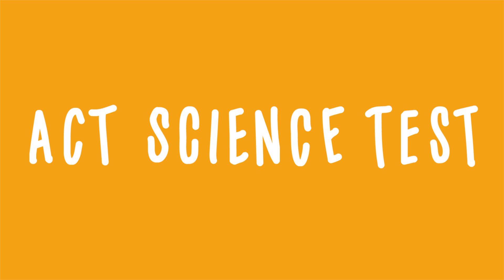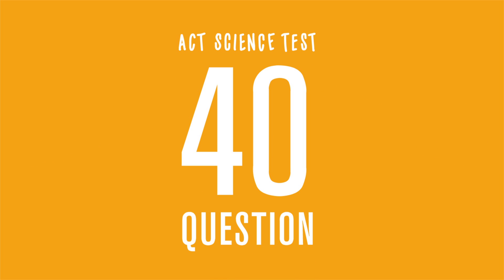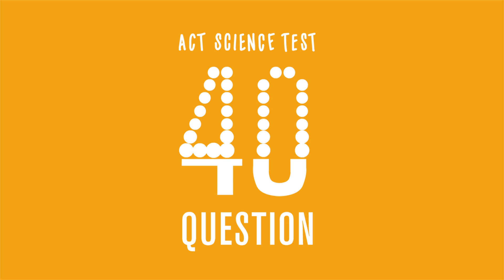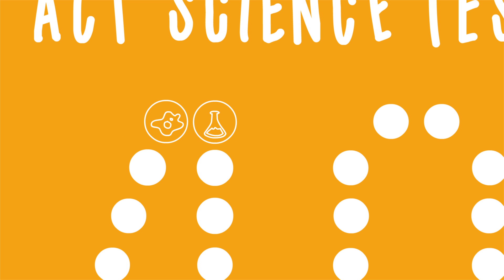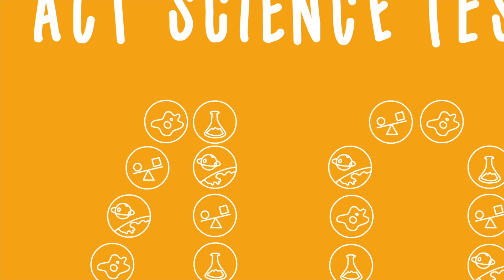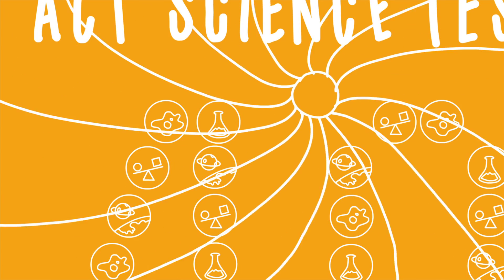The ACT Science Test is a 40-question exam that measures the problem-solving skills required in the natural sciences. It presents seven sets of scientific information related to subjects like biology, chemistry, physics, and earth-space sciences, each followed by multiple-choice questions.